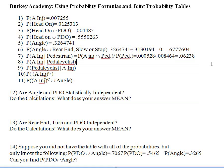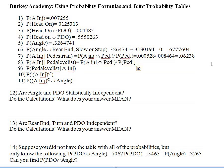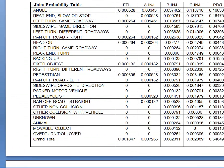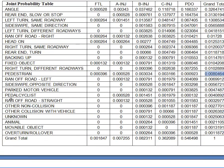Now let's do exactly the same thing for a bicyclist — a pedal cyclist. We'll modify the formula slightly: probability of an A injury and a pedal cyclist on top, divided by the probability there was a pedal cyclist involved. Going back to the table, the intersection of A injury and pedal cyclist is 0.000528 — actually the same as the intersection for pedestrian.